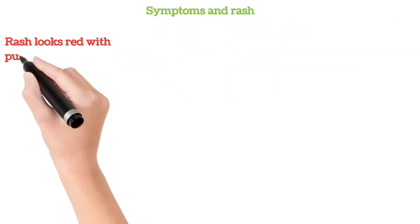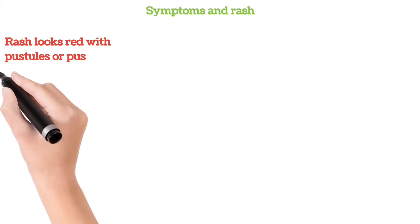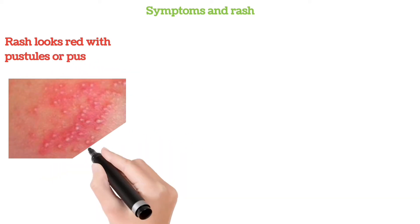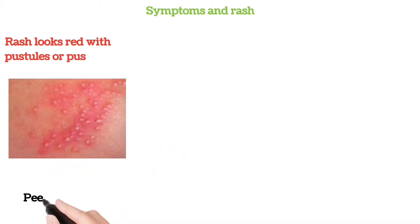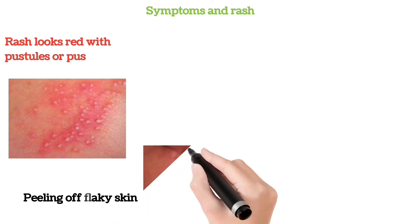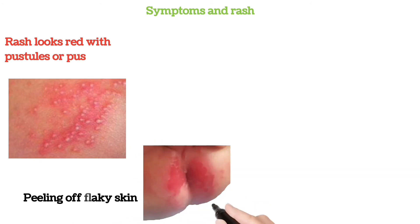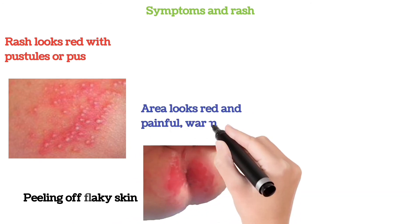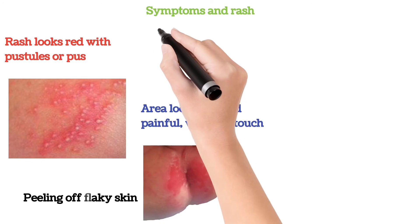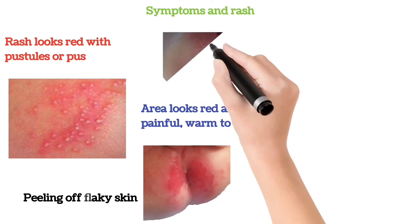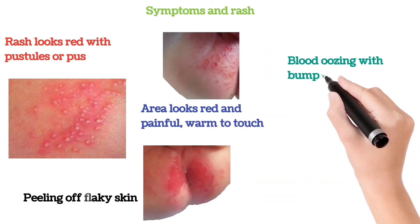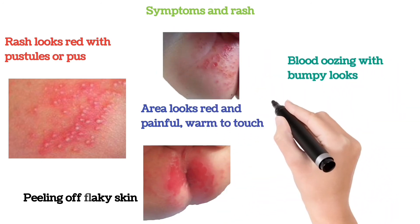Symptoms: the rash looks red with pustules or pus, peeling off flaky skin, the area looks red and painful, warm to touch, and blood oozing with a bumpy appearance.